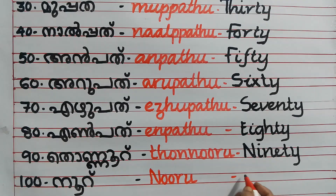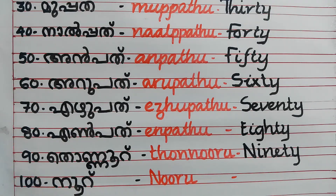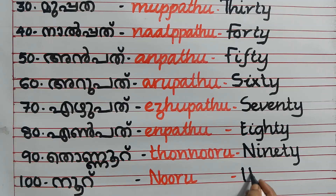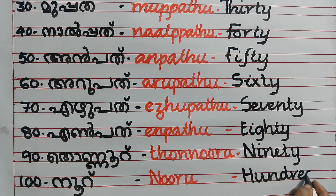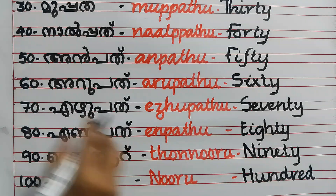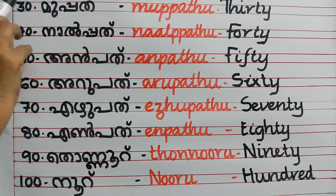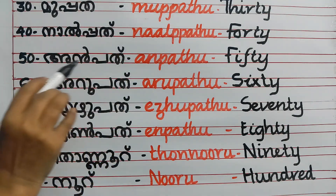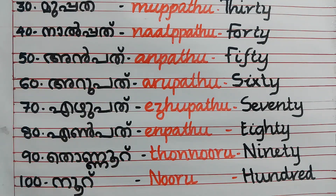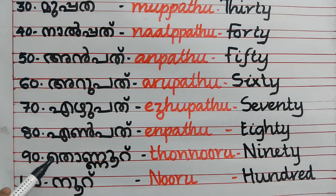Nore. Hundred, hundred. Hundred. 10, 20, 30, 40, 50, 60, 70, 80, 90, 100.